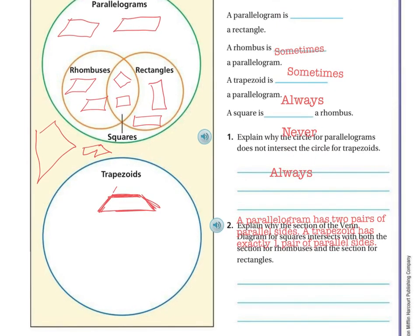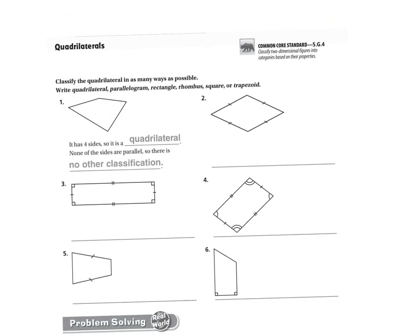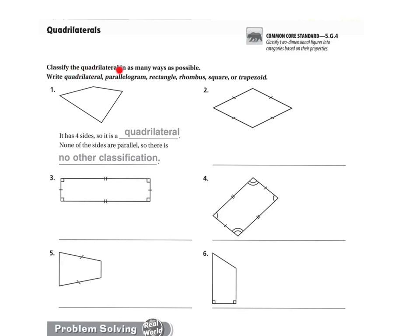But the next one asks, so for homework, they want you to classify the quadrilateral in as many ways as possible. So you're going to write quadrilateral, parallelogram, rectangle, rhombus, square, or trapezoid. So for example, on this one, they said that it has four sides, so that's a quadrilateral. But on this particular shape, it had no other classification, right? Because it doesn't have the two perpendicular lines, it doesn't have congruent sides. So let's look at this one. So this one has four sides, so we know it's a quadrilateral. We also know that it has two sets of parallel lines, right? So we know it's a parallelogram. And we know that it is a rhombus, right? So you're going to do the same thing on the rest of them.